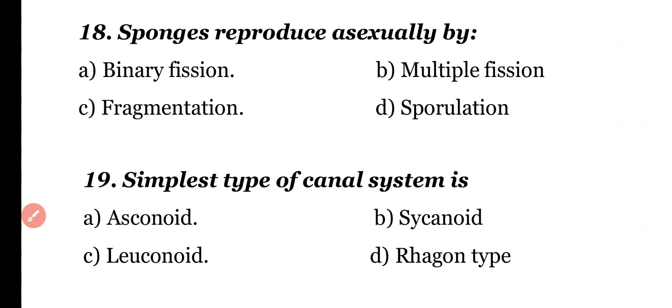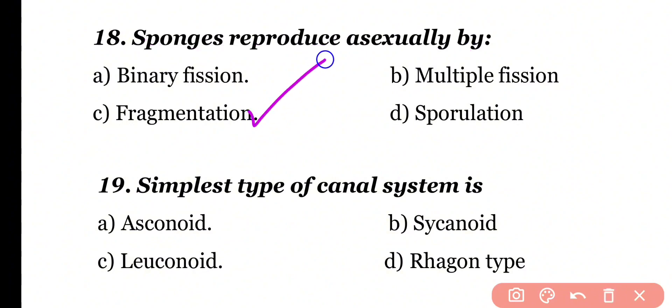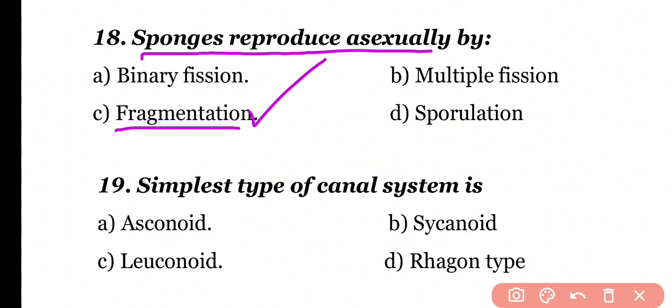Question number 18. Sponges reproduce asexually by means of: binary fission, multiple fission, fragmentation, or sporulation. Correct answer is option C. Sponges reproduce asexually by means of fragmentation.